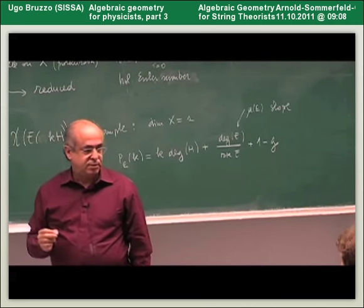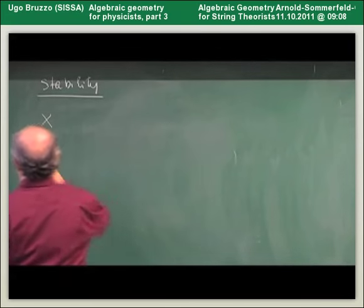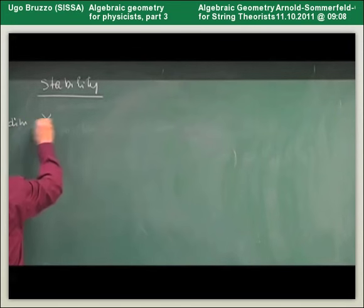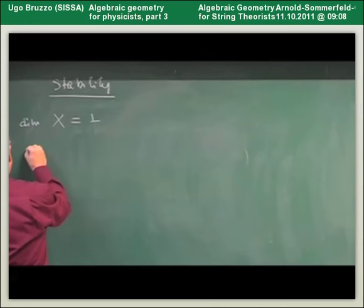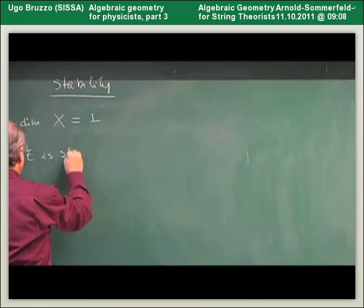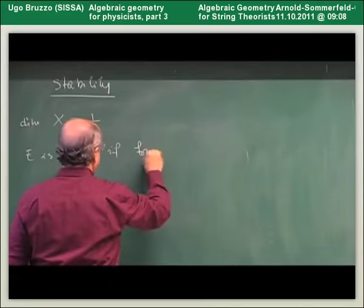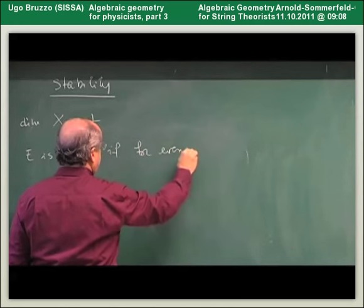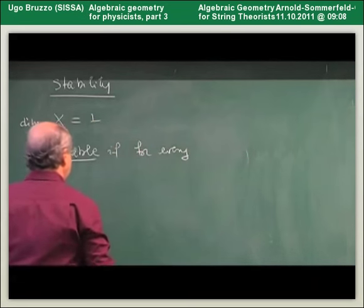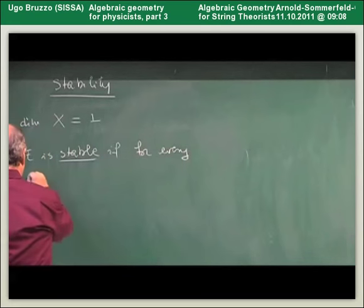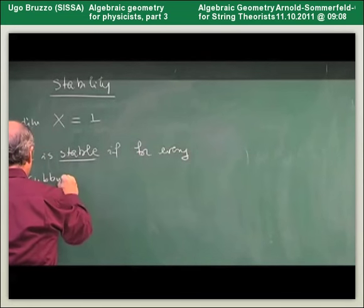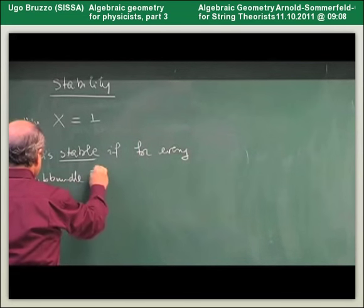The notion of stability is given exactly in terms of this polynomial. Let's start with the case of curves, where our variety X has dimension one. The general definition: E is stable for every sub-bundle — for every bundle F properly contained in E, meaning F is not zero, F is not E, and there is an injection of F into E.